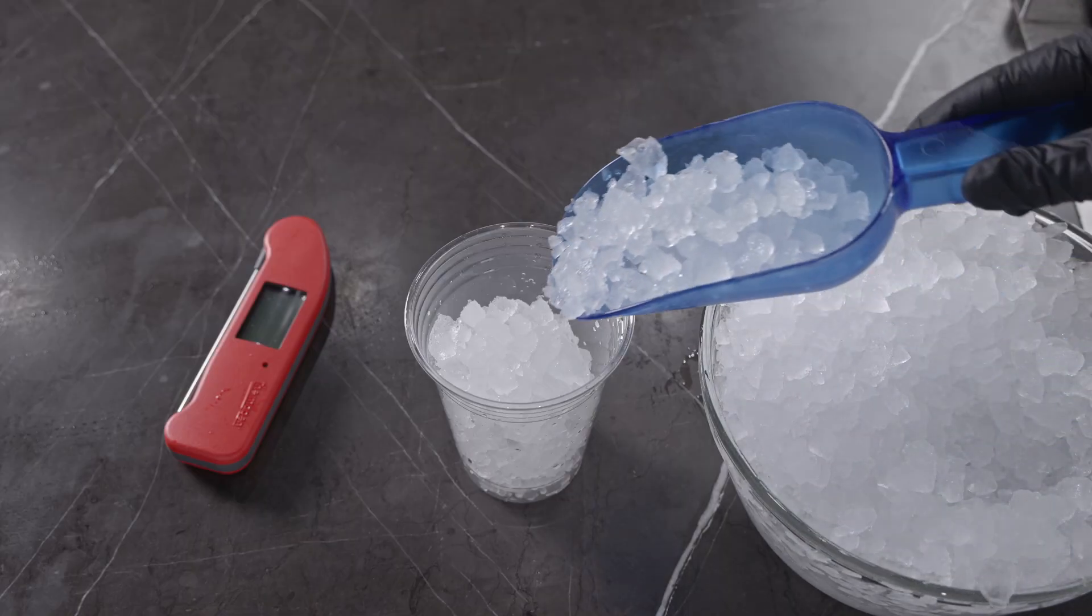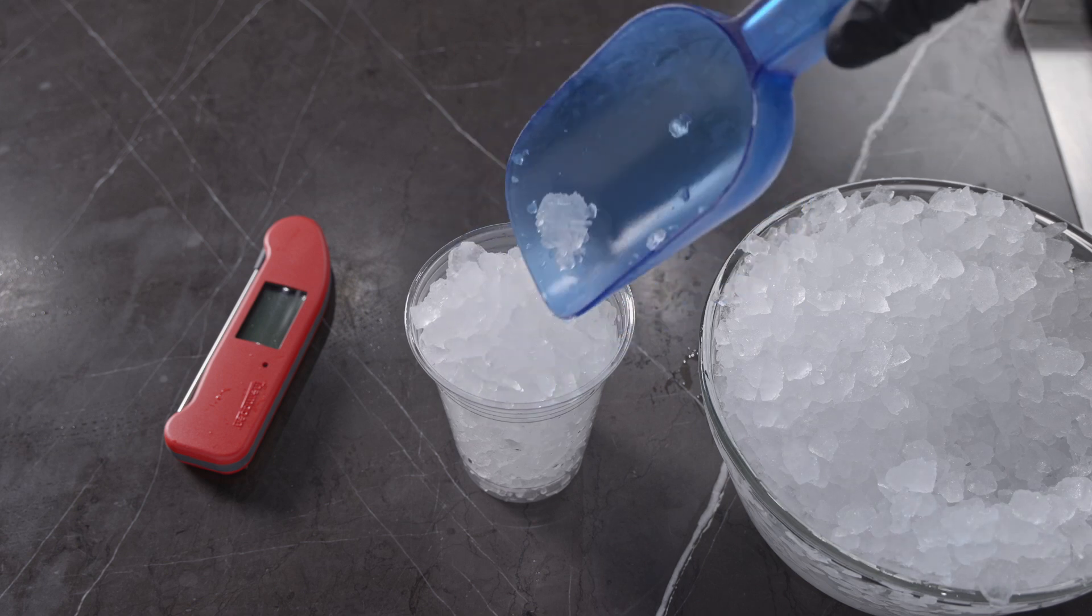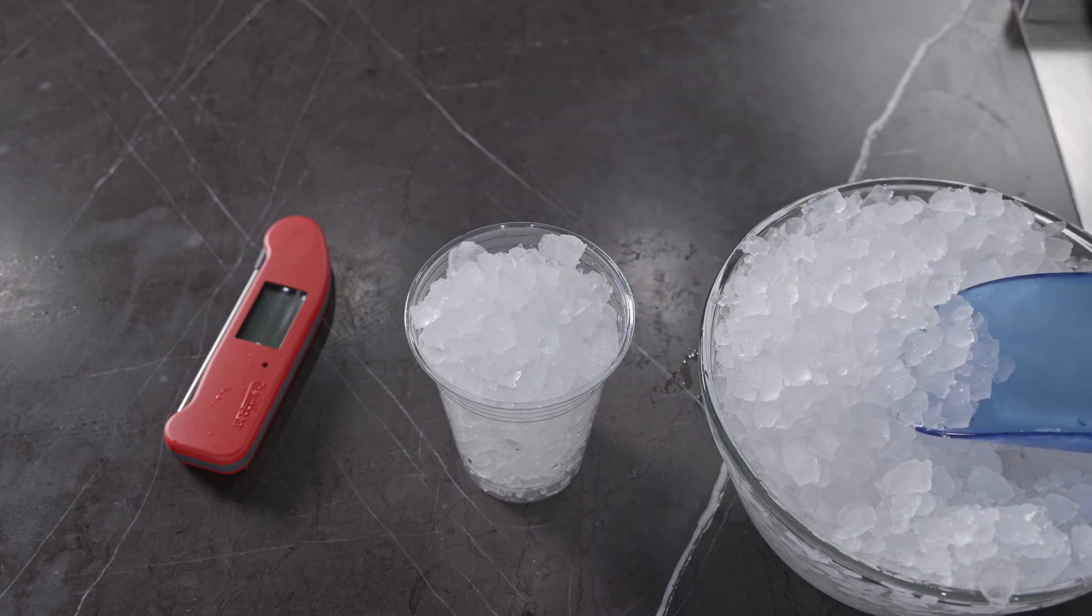So here's how to make a proper ice bath in four easy steps. Step 1: Fill a glass to the rim with ice.